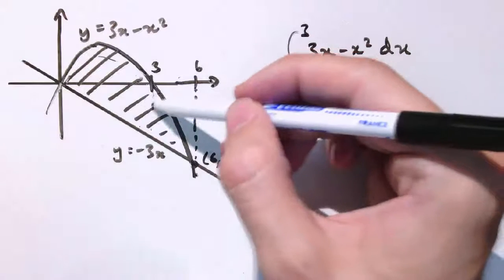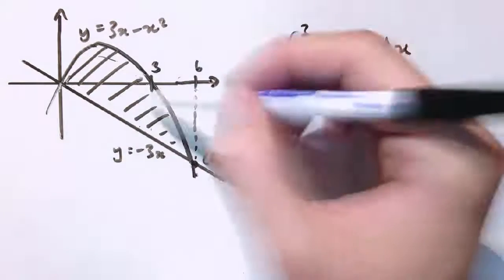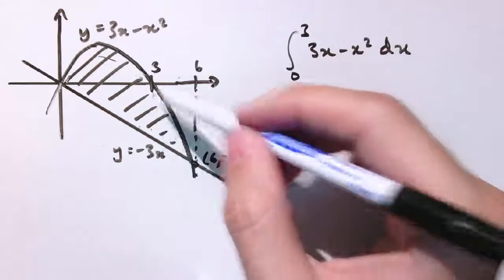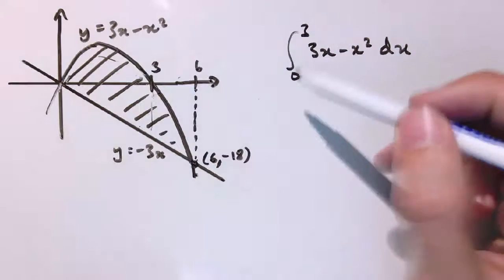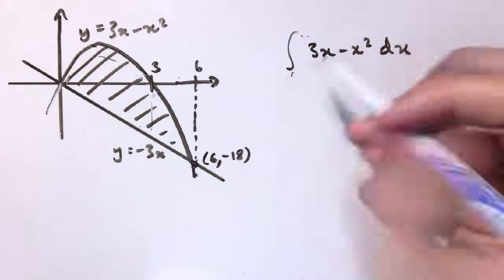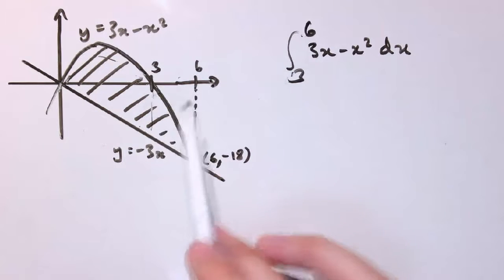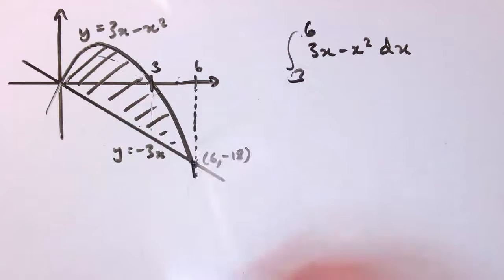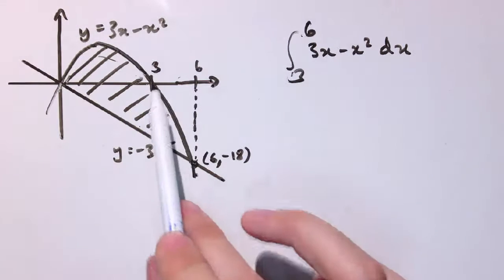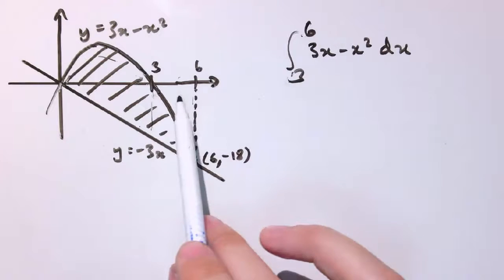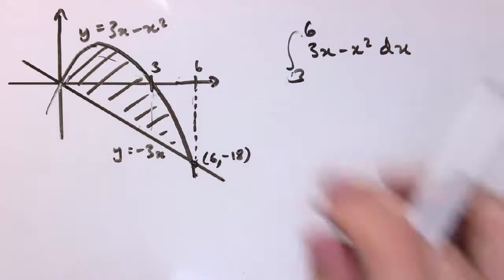And then I've got to work out this bit here, which I've got to work out separately because this is below the axis. If I do the integral between 3 and 6, that gives me this bit of area, which will be negative, so I make that positive. But then I actually want this bit here, so I work out the area of the trapezium and then subtract that area — and it all seems a bit messy.